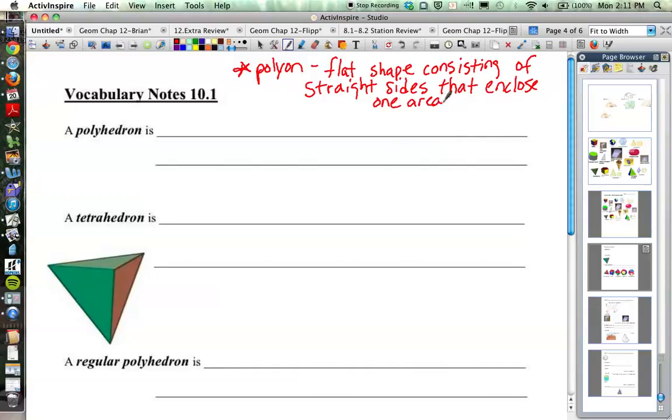Most of the shapes that we think about, two-dimensional shapes anyway, flat shapes, are polygons. And things that are not polygons, a circle is not a polygon because it doesn't consist of straight sides. Anything that has curved sides would not be a polygon.